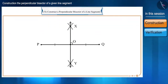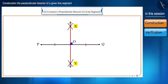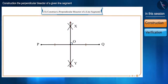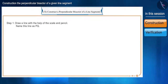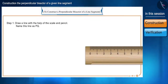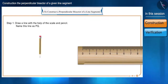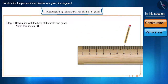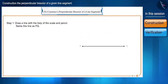Let's assume we have to construct a perpendicular bisector of PQ. So let's start the construction. The steps for this construction are as follows: with the help of a scale and pencil, draw a line segment and name it PQ.